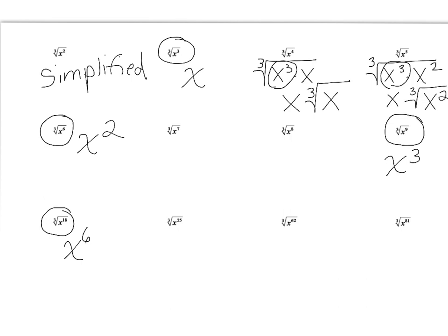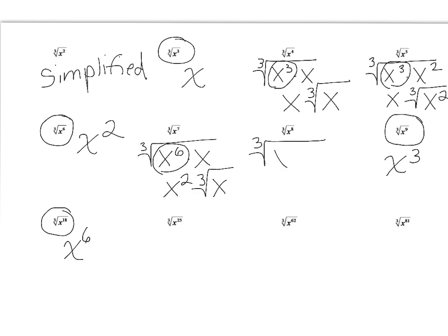We found the cube root of x to the sixth is x squared. For x to the seventh: go back one to get x to the sixth, so we break this into the cube root of x to the sixth times x. The cube root of x to the sixth is x to the second, and we're left with the cube root of x. For the cube root of x to the eighth: 8 is not divisible by three, so we go back two to get six. We break this into the cube root of x to the sixth times x to the second. The cube root of x to the sixth is x to the second, and we're left with the cube root of x to the second on the inside.